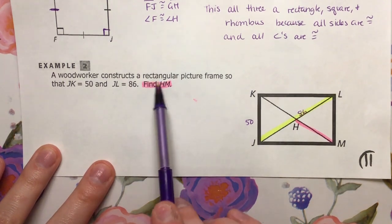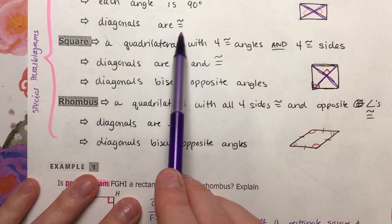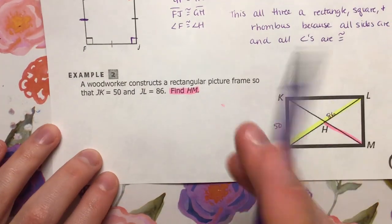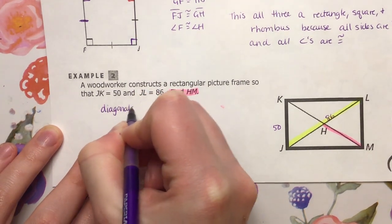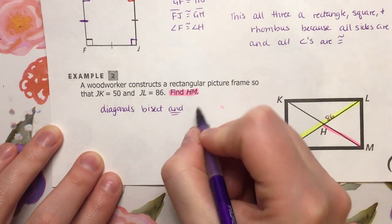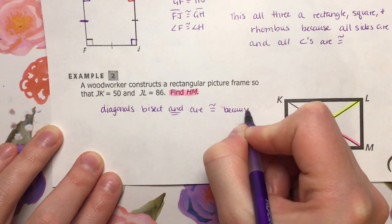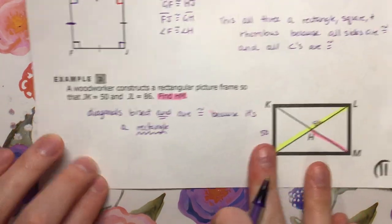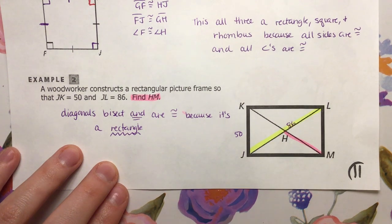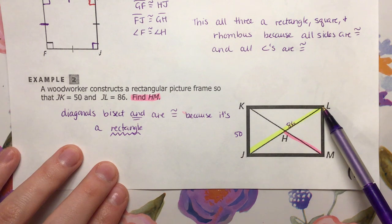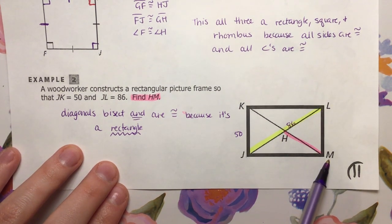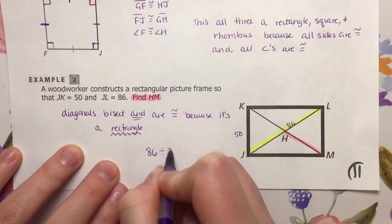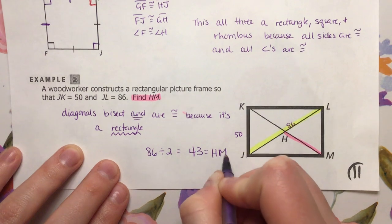This is a rectangular picture. I know diagonals are congruent to each other. I also know because it's a parallelogram, diagonals bisect each other. Diagonals bisect and are congruent because it's a rectangle — this would not work if it were just a regular plain parallelogram. So that means from J to L the whole thing is 86, which means from K to M the whole thing would also be 86. So if I want to know just from H to M, I can take 86 and divide it by 2. 86 divided by 2 is 43, and that's what HM equals.